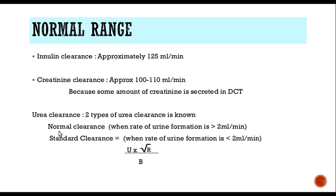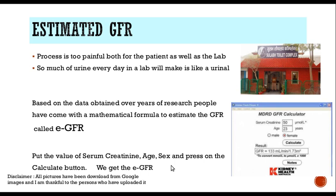If you are doing urea clearance, there are two types: the normal clearance and the standard clearance. When the rate of urine formation is greater than 2 ml per minute, we use the maximum clearance formula which is U × V / B. When the rate of urine formation is less than 2 ml per minute, we use the standard clearance formula which is U × √R / B. This test is no longer being done so we don't need to know much about it.